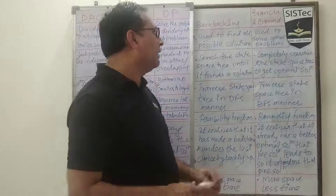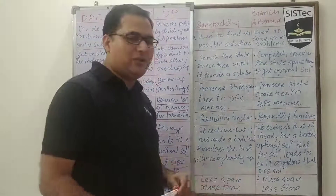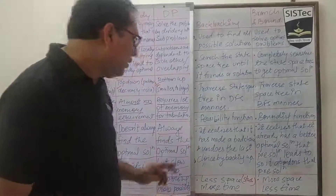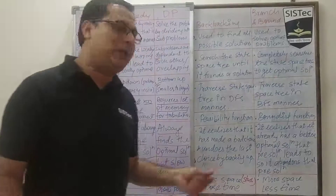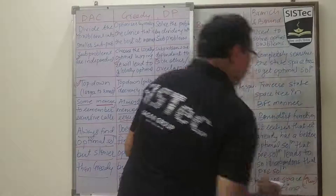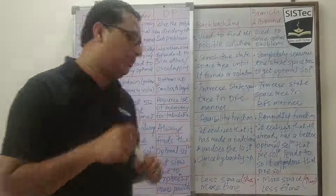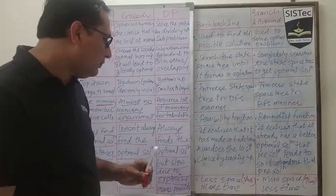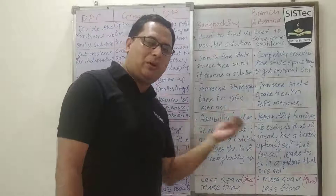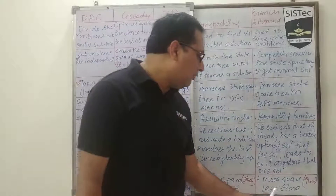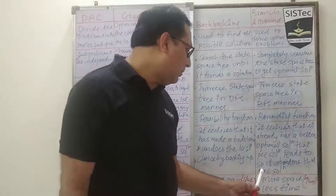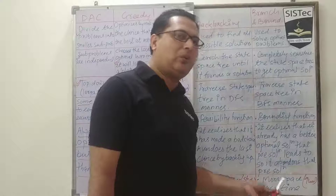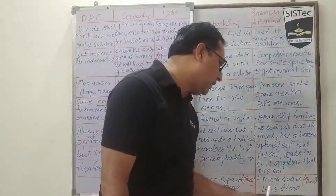The last important point regarding backtracking and branch and bound is space and time. Backtracking uses less space because it uses a stack and always explores in DFS manner. Whereas branch and bound requires more space, as when going in breadth-first manner it uses a queue and needs to hold all possibilities in memory. In terms of time, backtracking requires more time when exploring all possibilities. However, by applying the bounding function in branch and bound — especially least-cost branch and bound — we can reduce the number of possibilities explored, requiring less time.